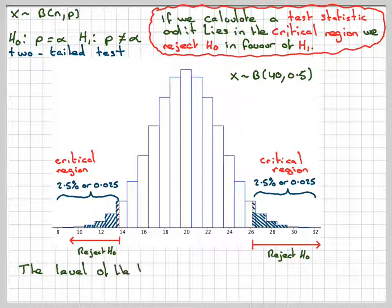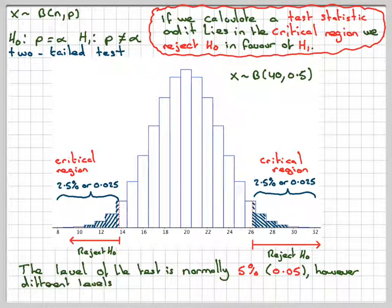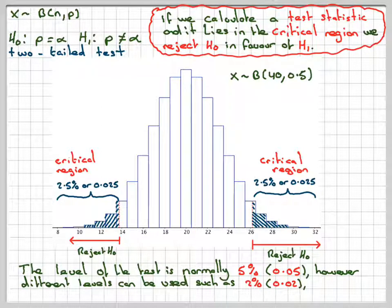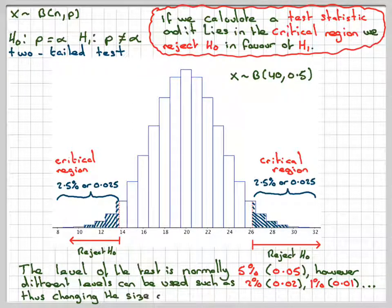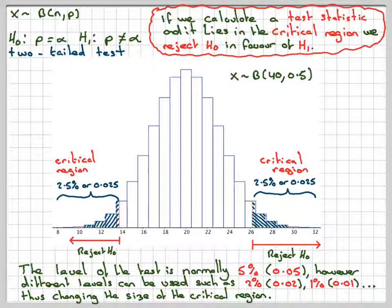Now, the level of the test is normally 5%. If it's not said, it's normally 5%. However, different levels can be used, such as 2%, which would make that 0.02, which means that would have to be 0.01, so that line would have to be somewhere else, and this line would have to be somewhere else as well, and it would change for the one-tailed tests as well, 1%. And it would actually say, if you wanted to use a different level in the test, that would change the size of the critical region.